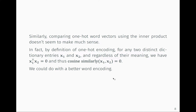Problem number two with one-hot encoding: we need to define the scalar product, which is the first thing a neural net does — a scalar product between inputs and weights. With one-hot encoding, because you have zeros everywhere and only one at a particular entry, when you take the scalar product between any two words you necessarily get zero. So whatever two words I choose, the scalar product between them is zero. Normally the scalar product is associated with a notion of similarity, but here it gives us nothing.